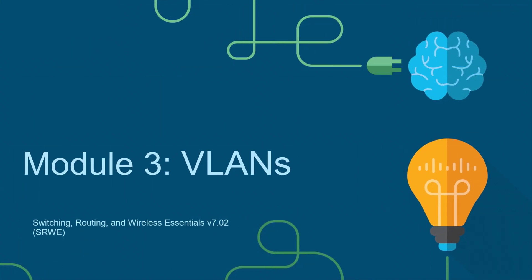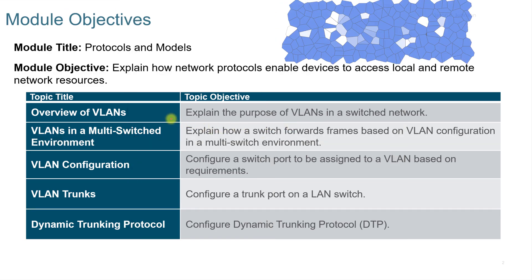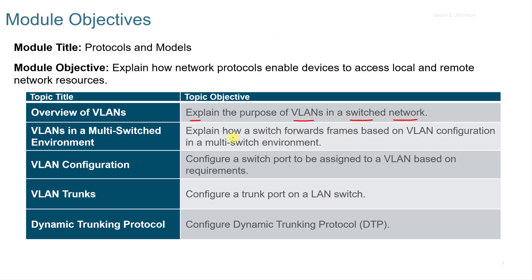This video accompanies the Cisco Netacad Switching, Routing, and Wireless Essentials course. This video is Module 3, VLANs. In this video we're going to look at the following objectives: explain the purpose of VLANs in a switch network, explain how a switch forwards frames based on a VLAN configuration in a multi-switch environment, configure a switch port to be assigned to a VLAN based on requirements, configure a trunk port on a LAN switch, and configure a Dynamic Trunking Protocol or DTP.